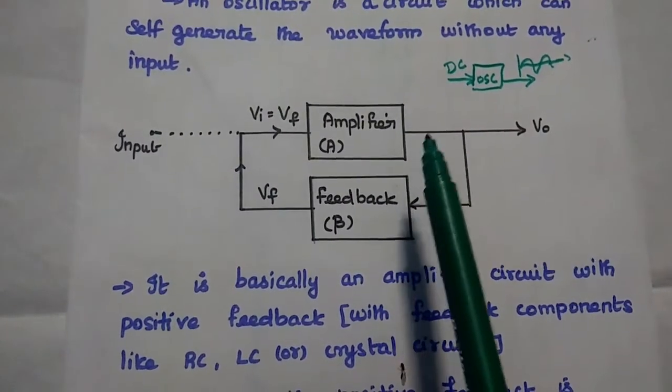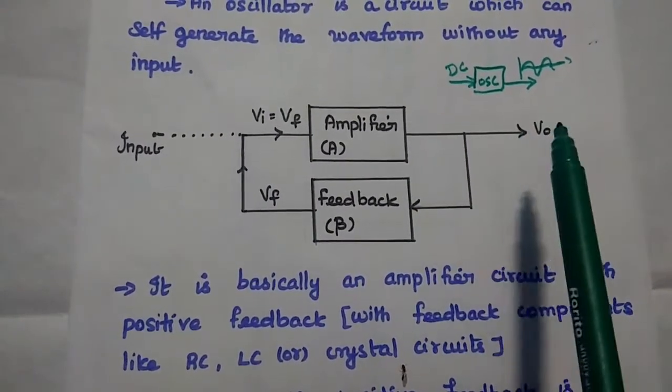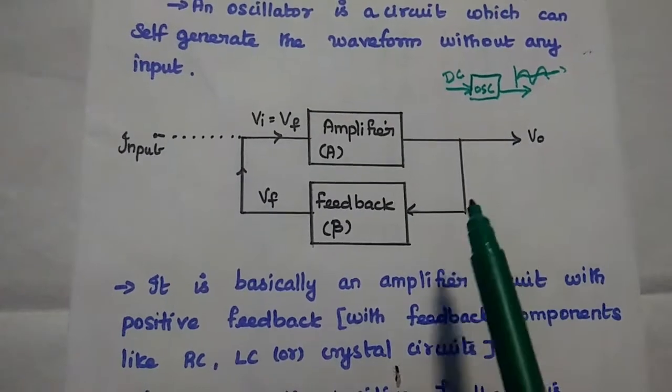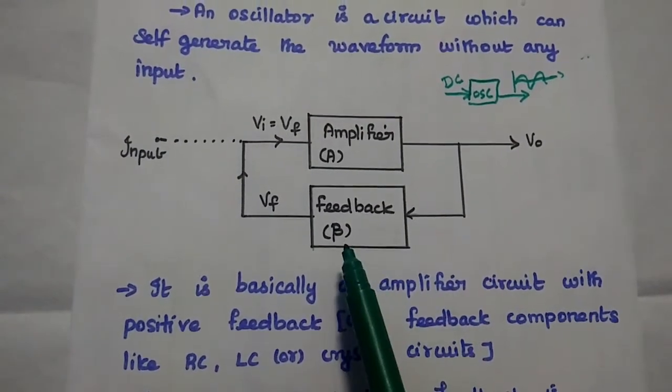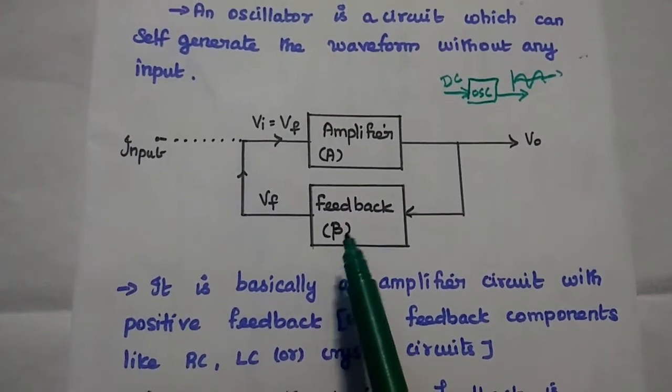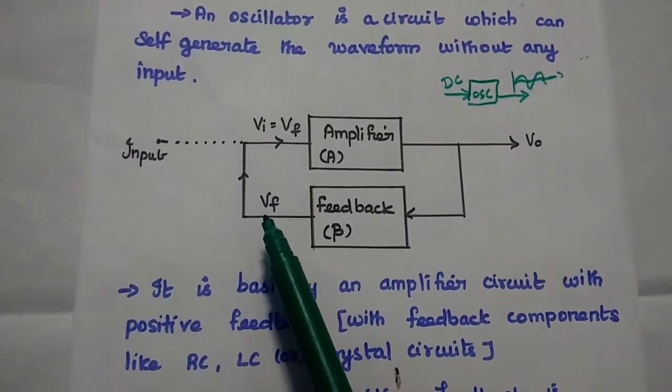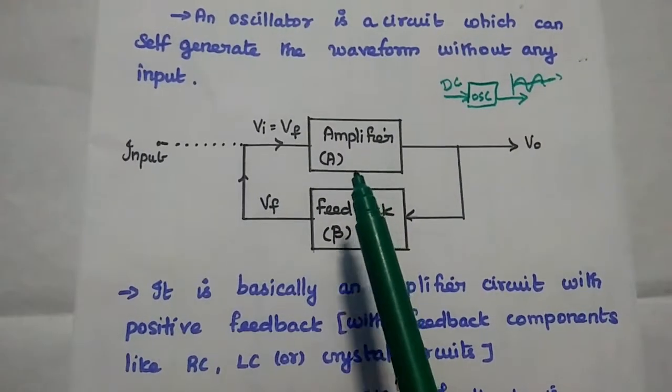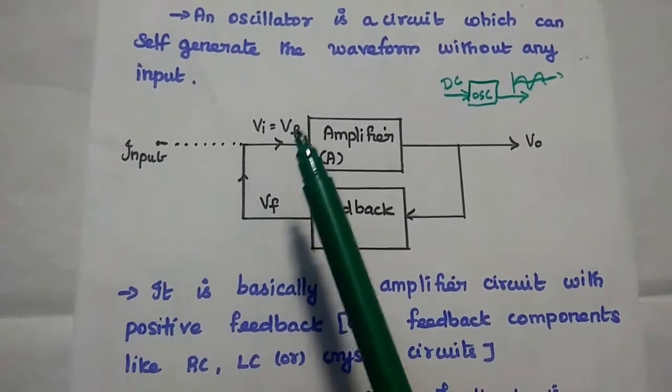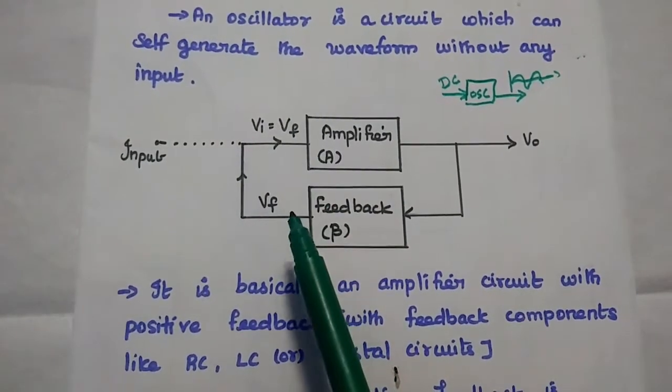It can generate some small amount of noisy signal as an output that can be given as input to this feedback with a gain beta. So for this oscillator, it can produce the feedback signal VF. The input signal is nothing but the feedback signal.